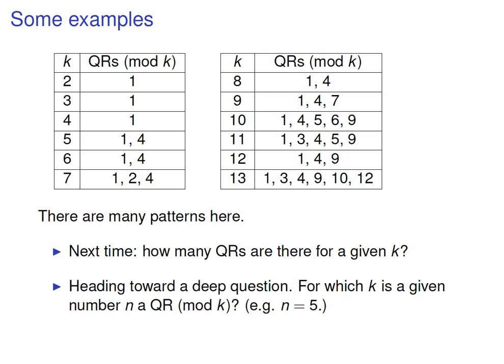Where we're headed is toward answering a deep question: for which k is a given number n a square mod k? For example, for which values of k is 5 a square mod k? In the tables exhibited, you can see that 5 is a square mod 10 and mod 11, but not for any other values of k in the tables. So we're headed toward classifying all values of k for which 5 is a square mod k, for example. Thanks very much for listening.